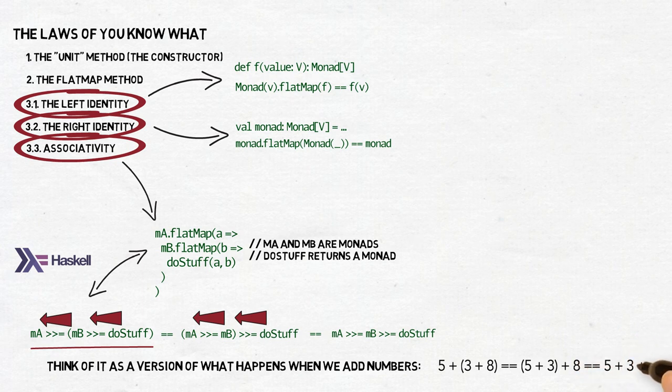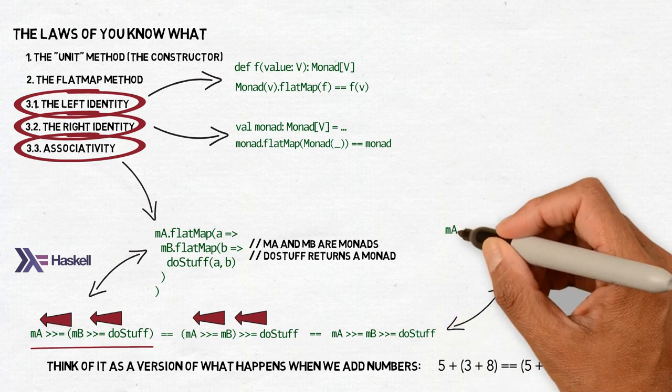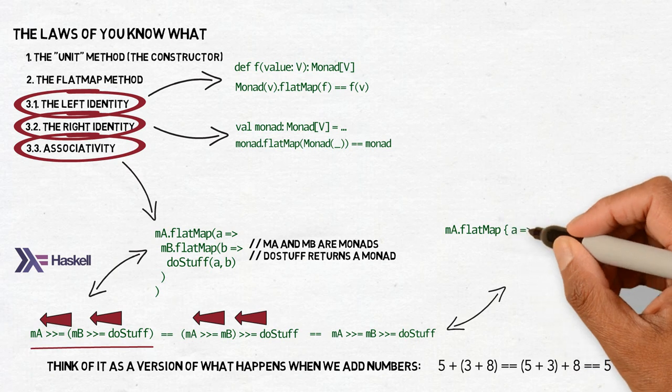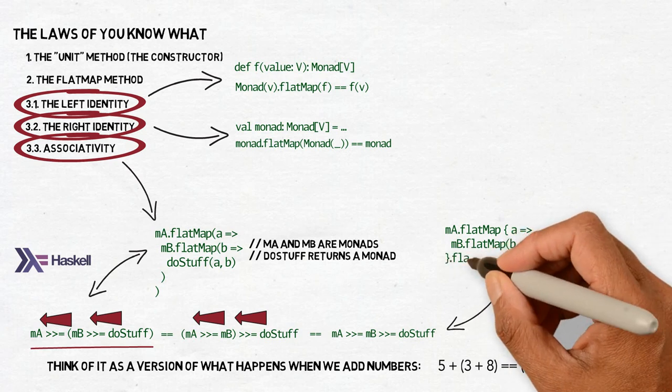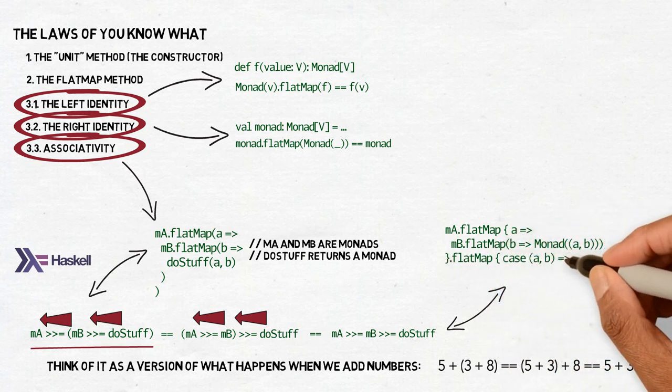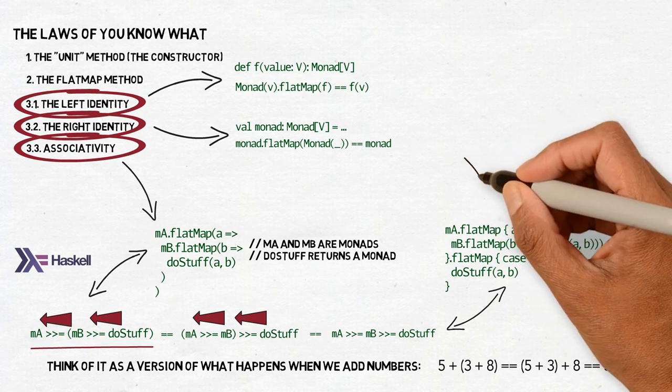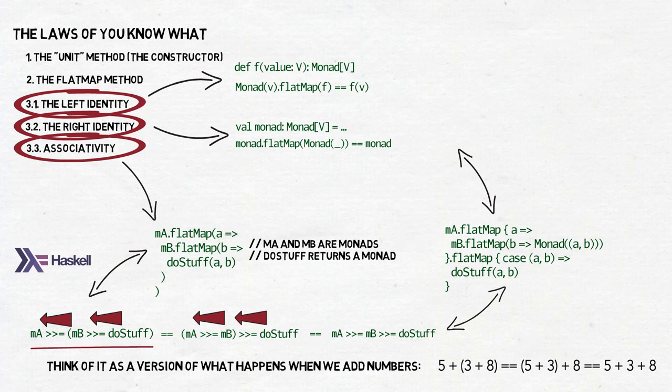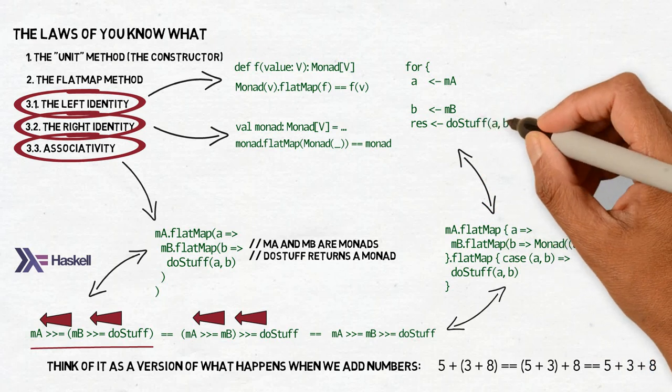They should. In our case, it means that the nested code like this can be refactored to this. So we have the ma monad and we flatmap the element inside. And then we can have the mb monad flatmapping the element inside to a monad of a and b. Like the monad has a tuple now inside. And then we flatmap that new monad to the do-stuff on the elements. And then after we do it, we can sprinkle it with syntactic sugar and get this. For a, b, res, yield res.